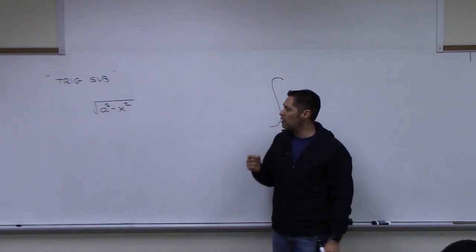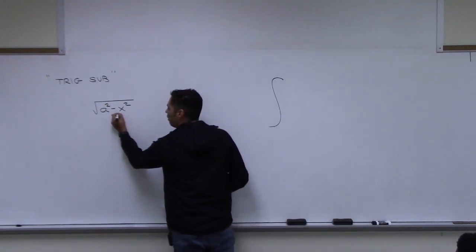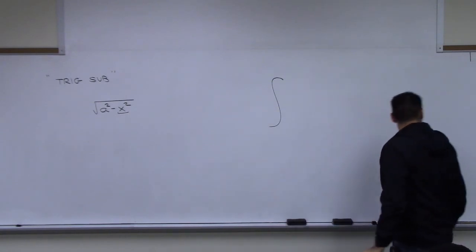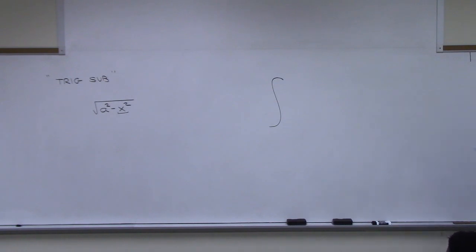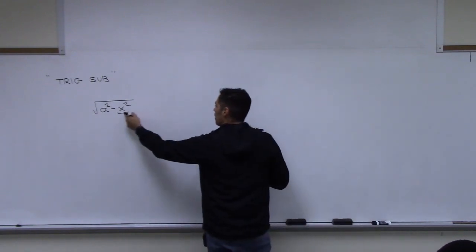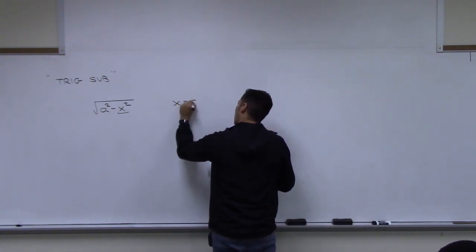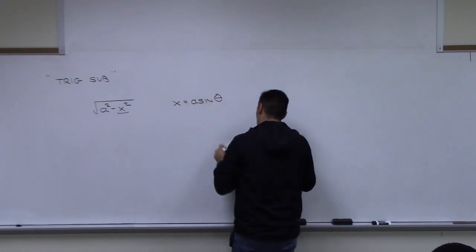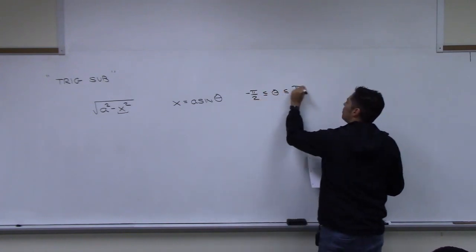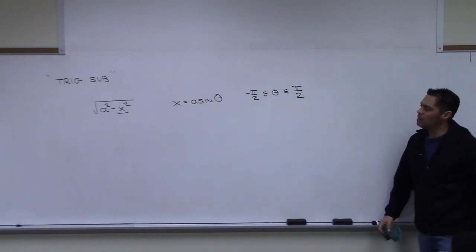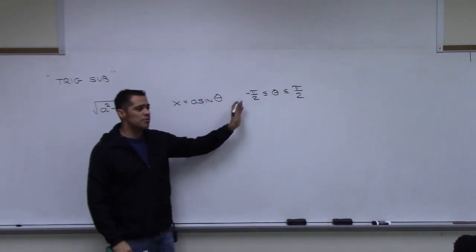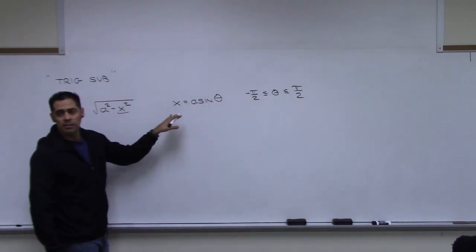We go in and replace the variable x with something — make a substitution. From the table, the inverse substitution is x equals a sine theta. We have restrictions on theta, which look familiar — they're the domain restrictions from the arcsine, your inverse sine function.